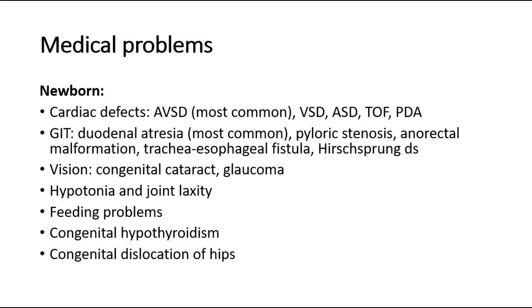They may also have medical problems. For newborns with Down syndrome, there are usually associated cardiac defects, where AVSD is the most common type. For the gastrointestinal tract, the most common abnormality is duodenal atresia. Others include pyloric stenosis, tracheo-esophageal fistula, Hirschsprung disease, and anorectal malformation.